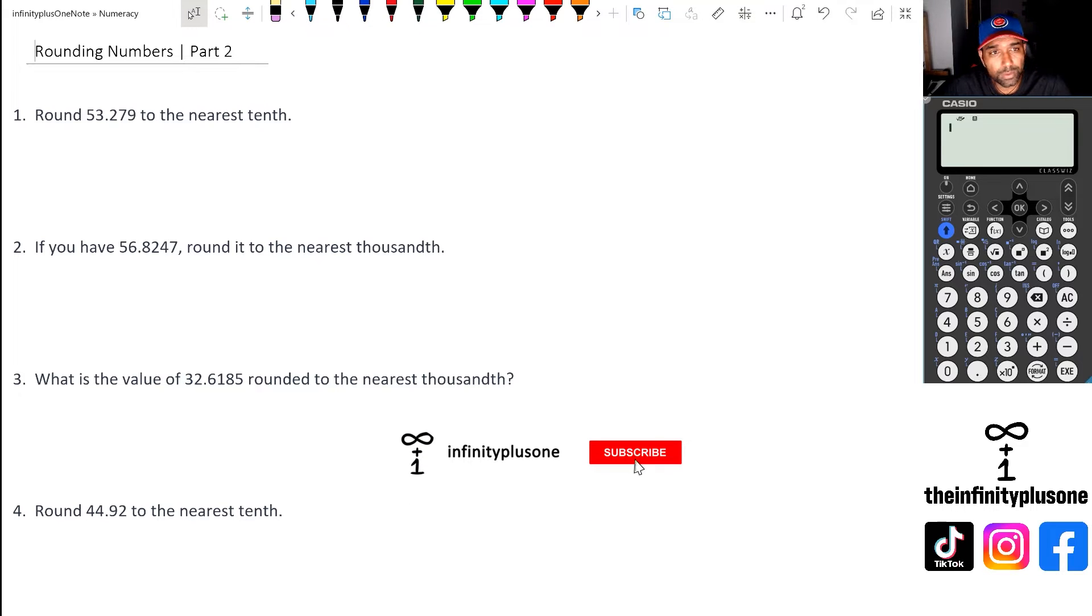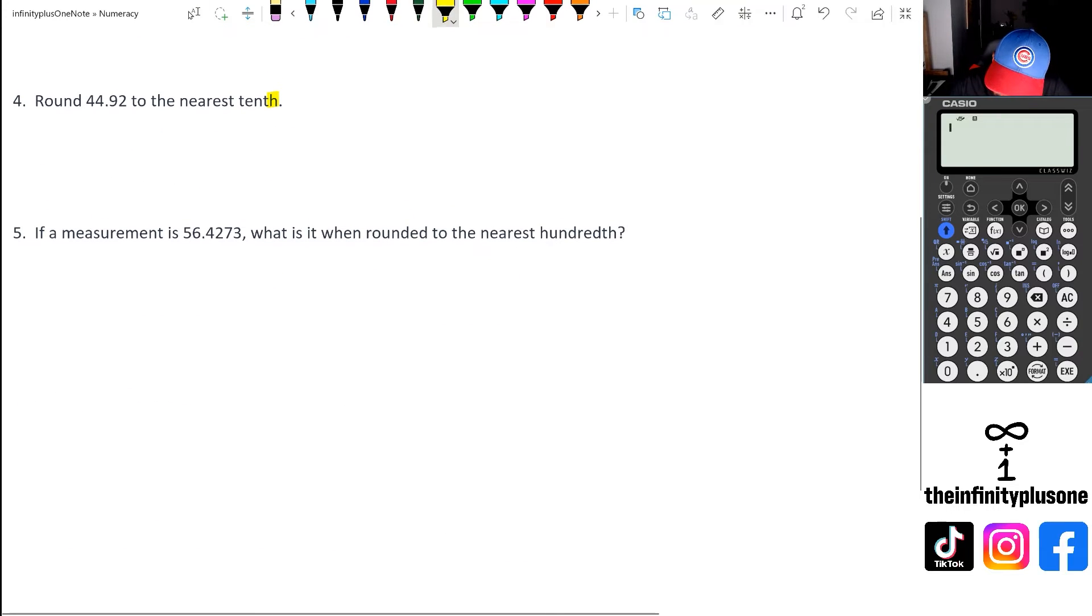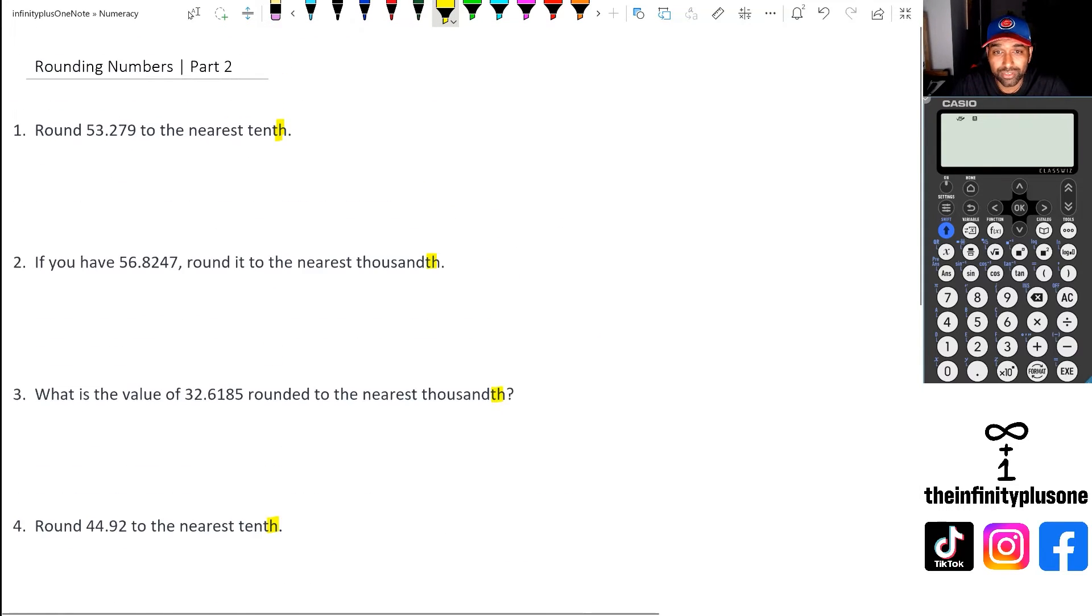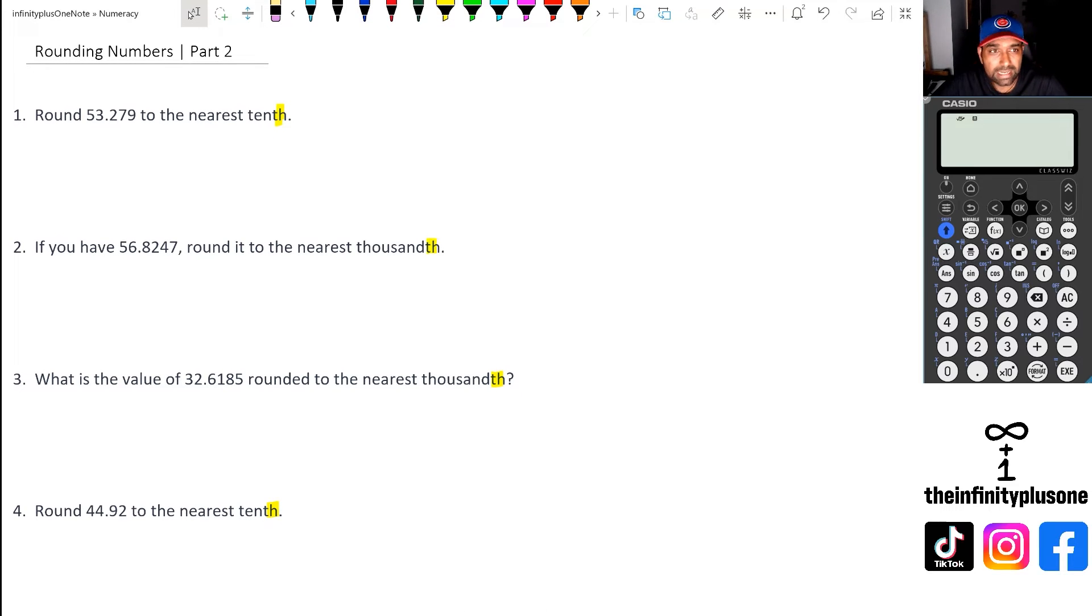So in the previous video, we were looking at place value in hundreds and thousands. Now we've got a slightly different language change: the tenth, the thousandth. If you notice right at the end of those questions, there's a little 'th' there. Thousandth, tenth, and then the last question, which is a hundredth. So what does that actually mean?